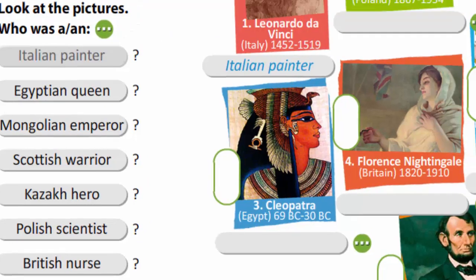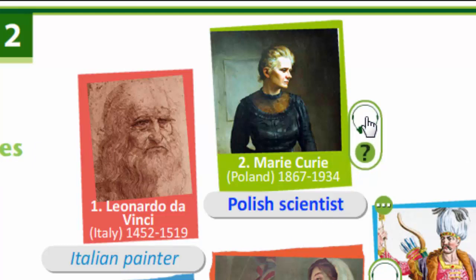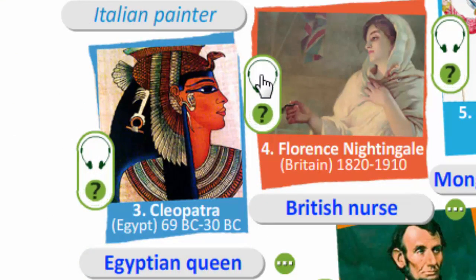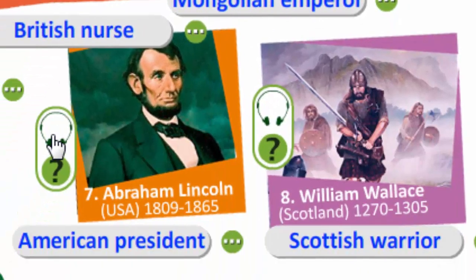Now let's listen and check. Leonardo da Vinci was an Italian painter. Marie Curie was a Polish scientist. Cleopatra was an Egyptian queen. Florence Nightingale was a British nurse. Genghis Khan was a Mongolian emperor. Barjan Momishuli was a Kazakh hero. Abraham Lincoln was an American president. William Wallace was a Scottish warrior.